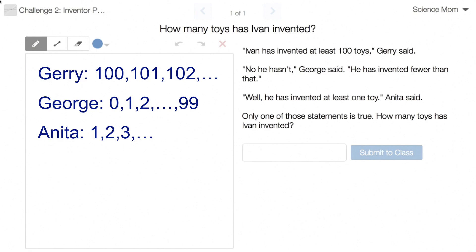And then Anita says he's invented at least one toy. Well, that means it could have been one, two, three, and so on. We know only one of these statements is true, and that means that we want the number that only shows up on one of these three lists. And a careful inspection of these lists will reveal that zero is the only possible number of toys that Ivan might have invented.